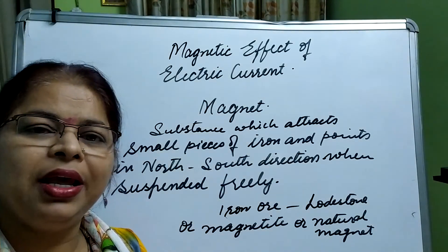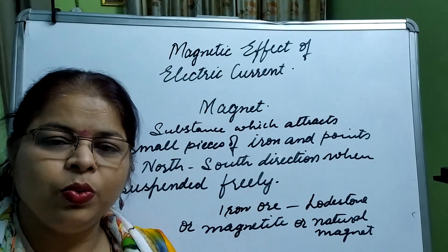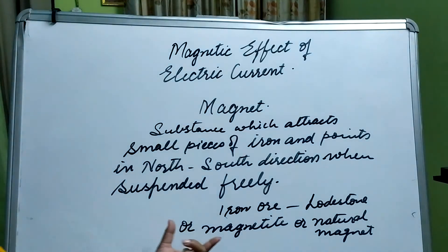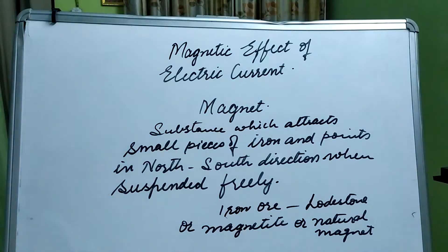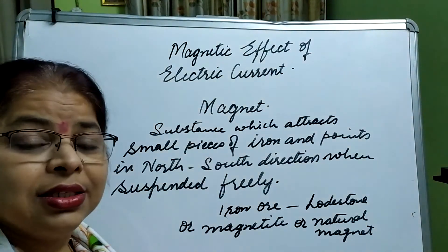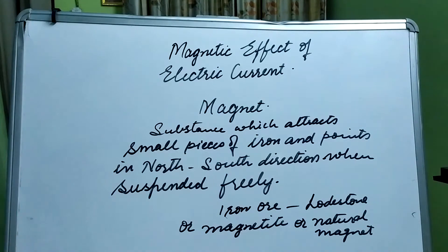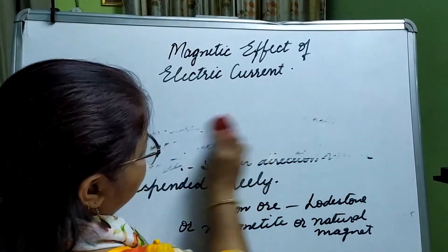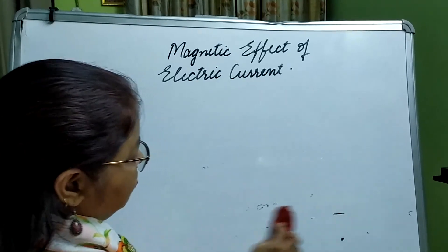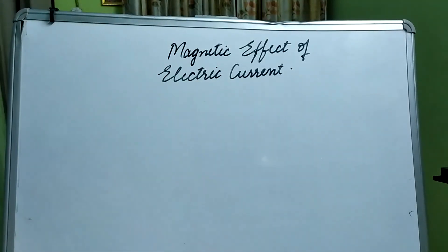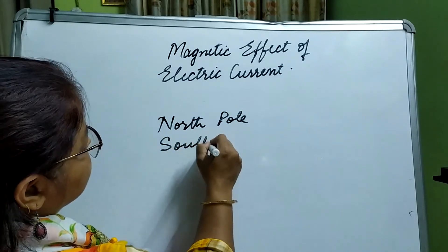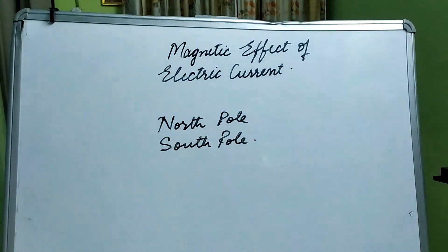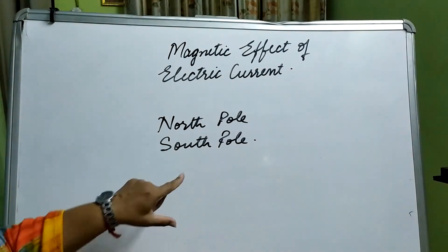It was found at a place called Magnesia, which is in Greece. There is a local story behind its discovery that you have already learned in previous classes, so we won't discuss it here. Now, a magnet has two poles — north pole and south pole. These are the names of the two poles of a magnet.